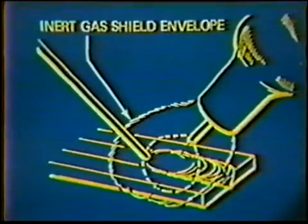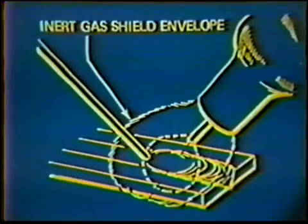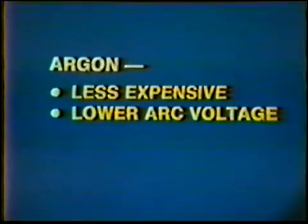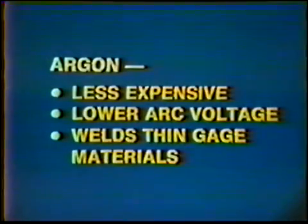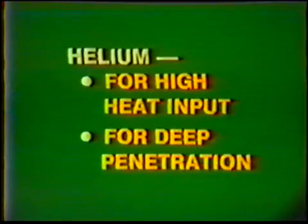The shielding gas protects the weld pool and tungsten electrode from oxidation during welding. The two most commonly used shielding gases are argon and helium. Argon is less expensive than helium and is the gas most often used. Argon also produces a lower arc voltage than helium at a given amperage. This makes argon excellent for welding thin-gauge metals where low arc heat is necessary to prevent excessive root bead penetration. Helium is normally used on heavy aluminum weldments where high heat input is required to produce deep root bead penetration, due to the greater arc voltage associated with helium.